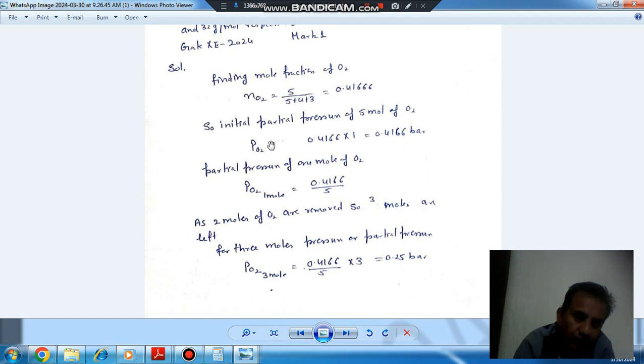And this is for 5 moles of O2. For 1 mole of O2, it will be 0.41666 by 5. And 2 moles of O2 are removed now.